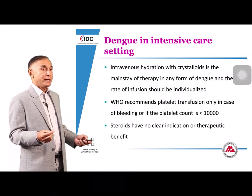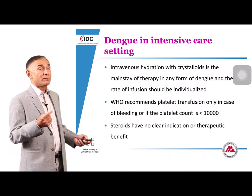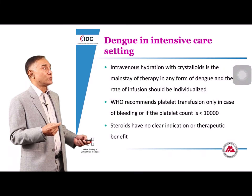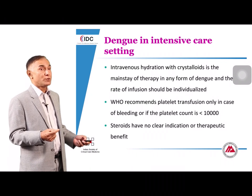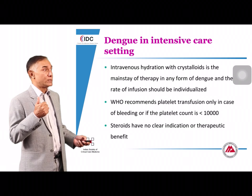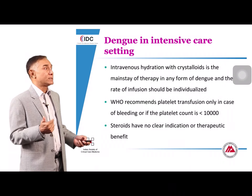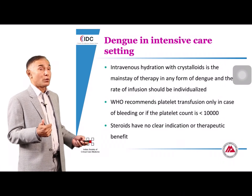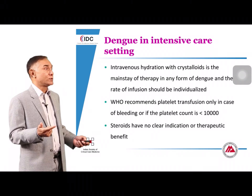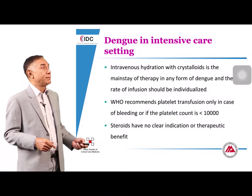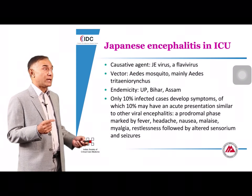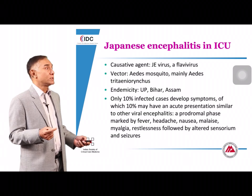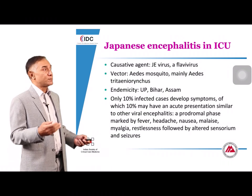Treatment of dengue is generally straightforward with crystalloid hydration; colloids provide no significant advantage. Platelet transfusions are reserved for patients who are actively bleeding or whose count is less than 10,000. There is no role for prophylactic platelet transfusions above that threshold, and no role for steroids or other immunomodulatory therapies.